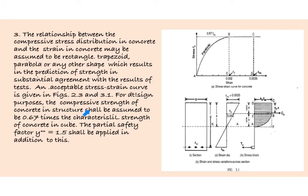For design purposes, the compressive strength of concrete in structure shall be assumed to be 0.67 times the characteristic strength of concrete in cube. The partial safety factor γ = 1.5 shall be applied in addition to this.